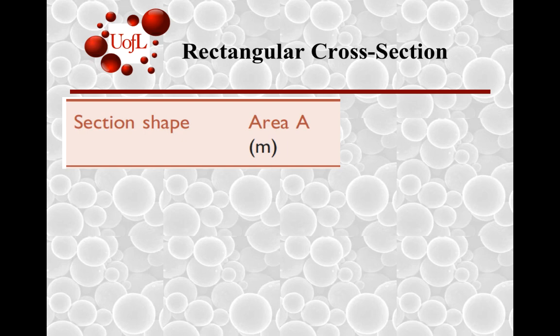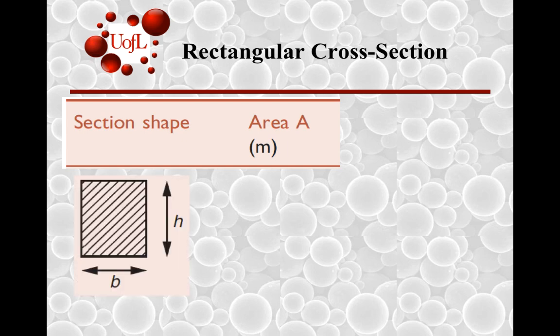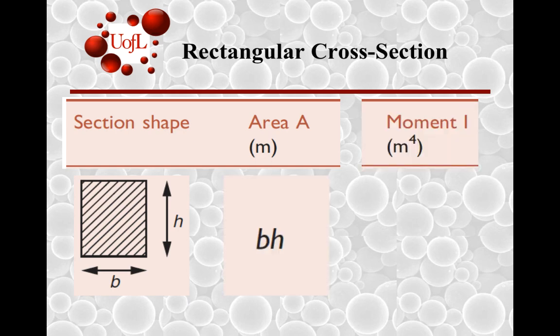Suppose we take a rectangular cross-section of sides B and H. The area would be B times H, and the area moment would be BH cubed by 12, from strength of materials information which is also summarized in table 9.2.